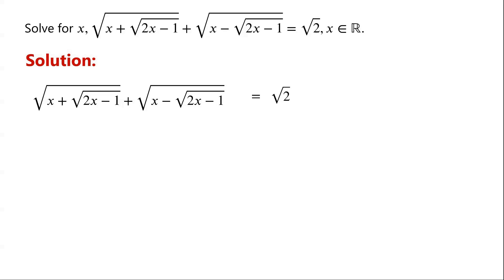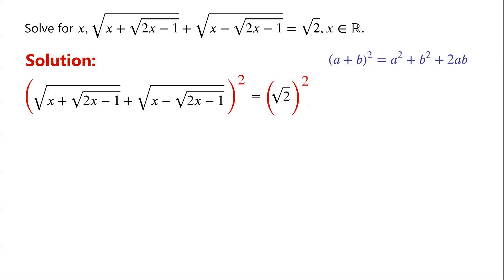As the radical expressions of the given equation are all on the left hand side of the equation, so we just square both sides of the equation. We know that (a + b)² equals a² plus b² plus 2ab.